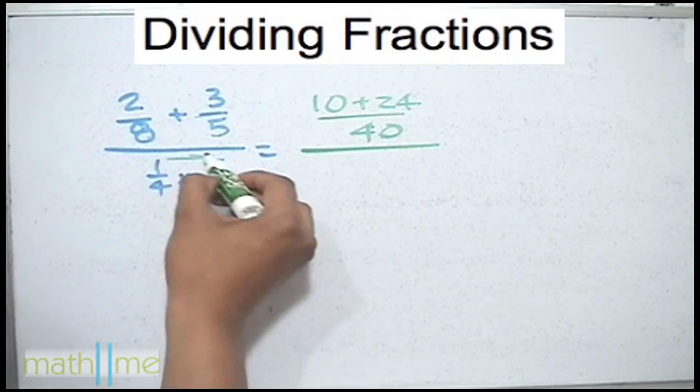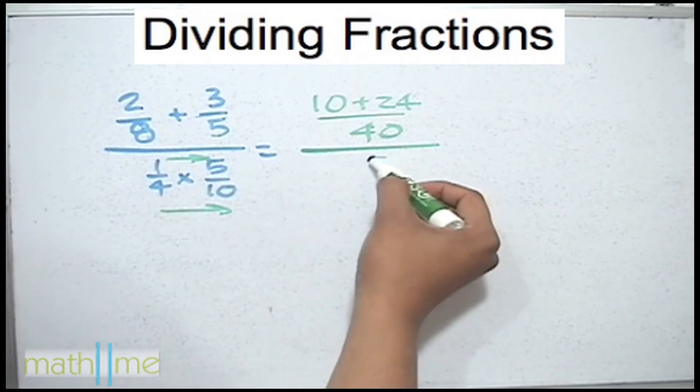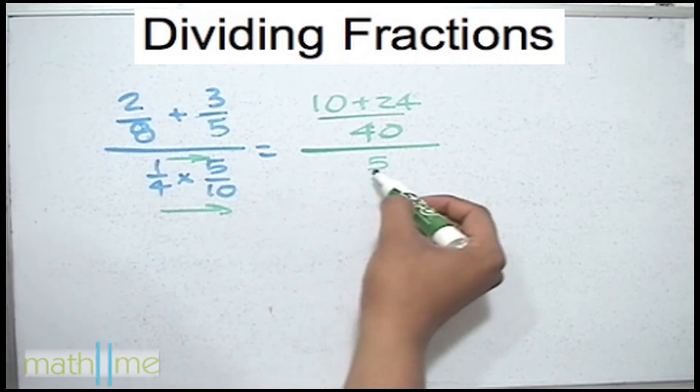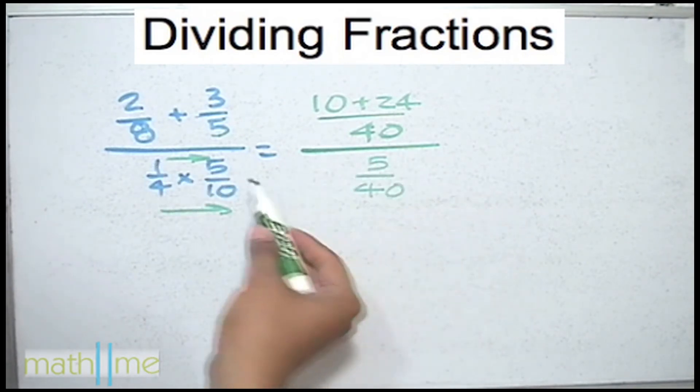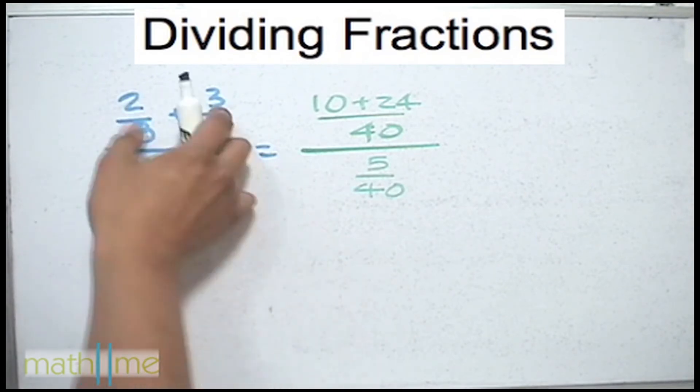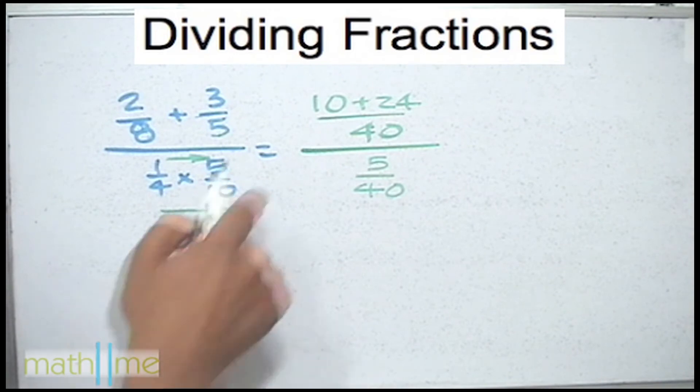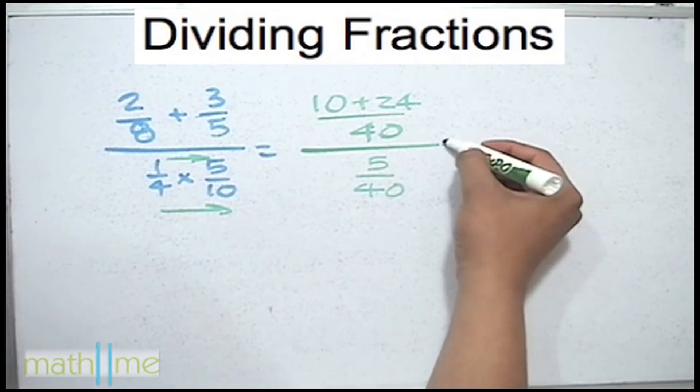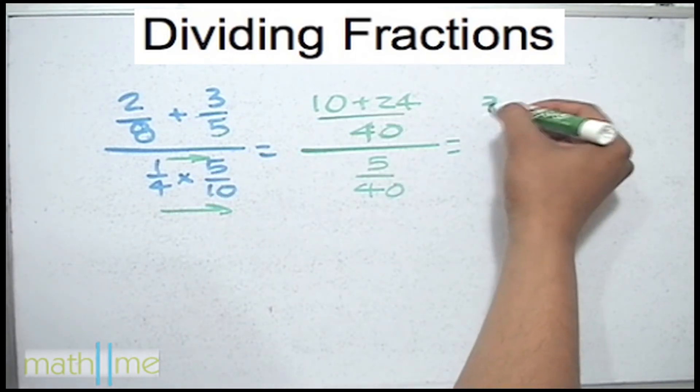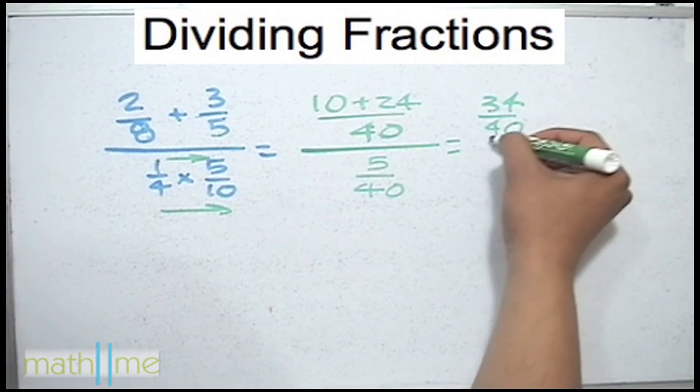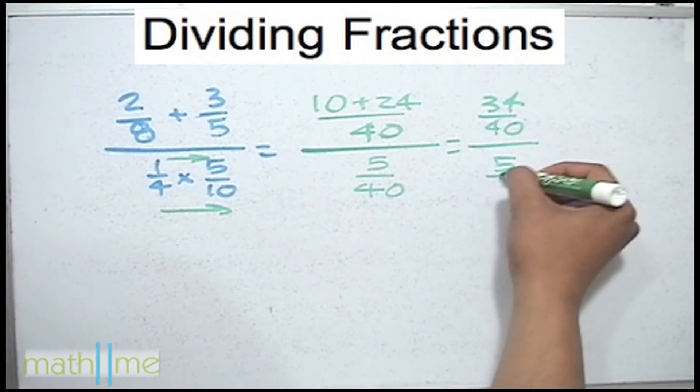In the bottom there is a multiplication so we need to multiply all numerators and all denominators. 5 times 1 is 5, 4 times 10 is 40. As you can see the top operation is independent of the bottom one. Here coincidentally both denominators were 40 but it doesn't mean that you always will get the same denominator. This is going to be 34 over 40 divided by 5 over 40.